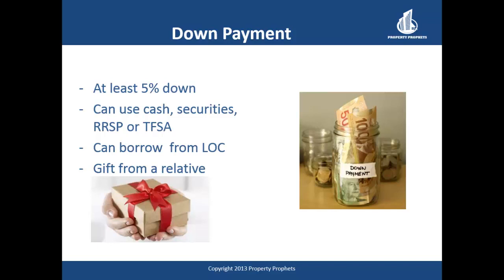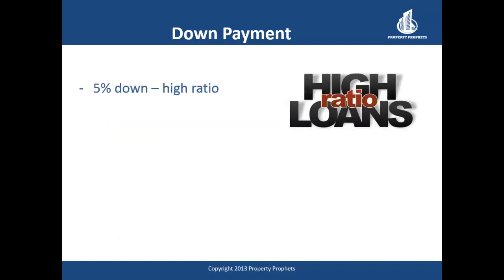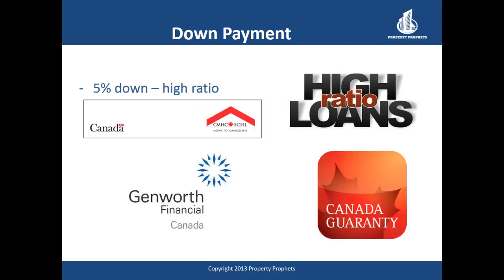A mortgage obtained with 5% down is considered a high-ratio mortgage, and is insured by either CMHC — Canada Mortgage and Housing Corporation — Genworth Financial, or Canada Guaranty. These companies have loan insurance programs which charge you a percentage of the mortgage amount depending on the loan-to-value. This typically gets added to the overall mortgage balance, though you can pay it in full at closing. If added to your mortgage, you're charged additional interest as it increases the mortgage amount. This insurance ensures that if you default, the lender gets what's owed from a pool of insurance premiums paid by borrowers across the country. These mortgages typically have the lowest rates and are given to borrowers who meet the lender's qualification standards.